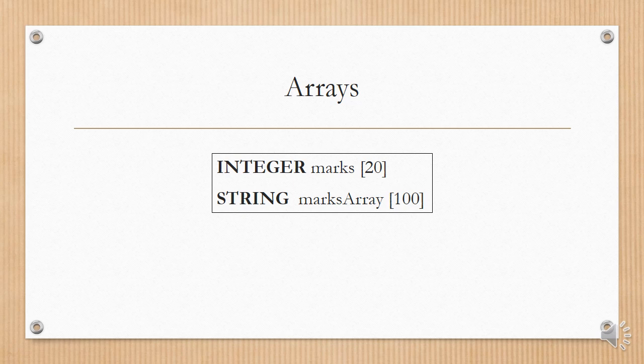If you need to use arrays in an algorithm, it looks a lot like Java, but it's the clearest way to note it. You would declare it by putting, for example, integer marks[20] for an array of 20 integer marks, or string marks array with square brackets 100. This does look a lot like Java, but there really isn't another way to note it.